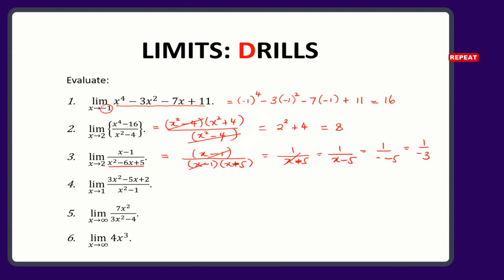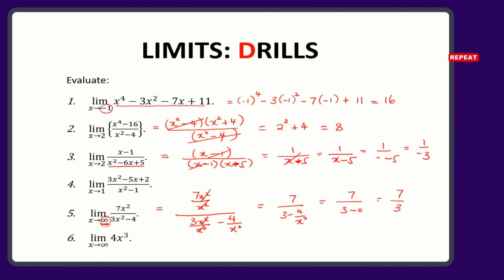You divide numerator and denominator by the highest power of the variable. In this case, it will be 7x squared divided by x squared, all divided by 3x squared on x squared minus 4 divided by x squared. This will cancel that. So we end up having 7 on 3 minus 4 on x squared. But look at the limits — it is tending to infinity. So 4 on infinity squared will become 0. We'll end up with 7 on 3, and that will be our answer.